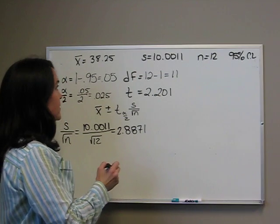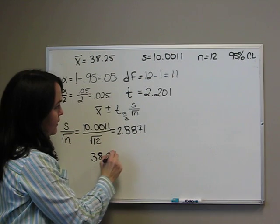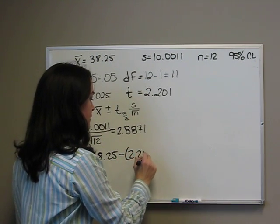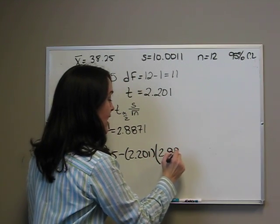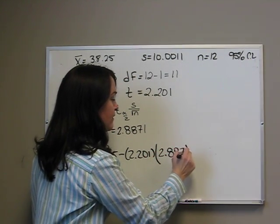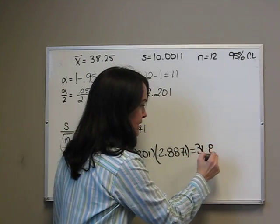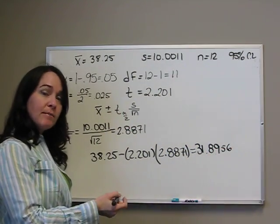Then we take our x̄, 38.25. First, we subtract our t-score times s divided by the square root of n, and we get 31.8956.